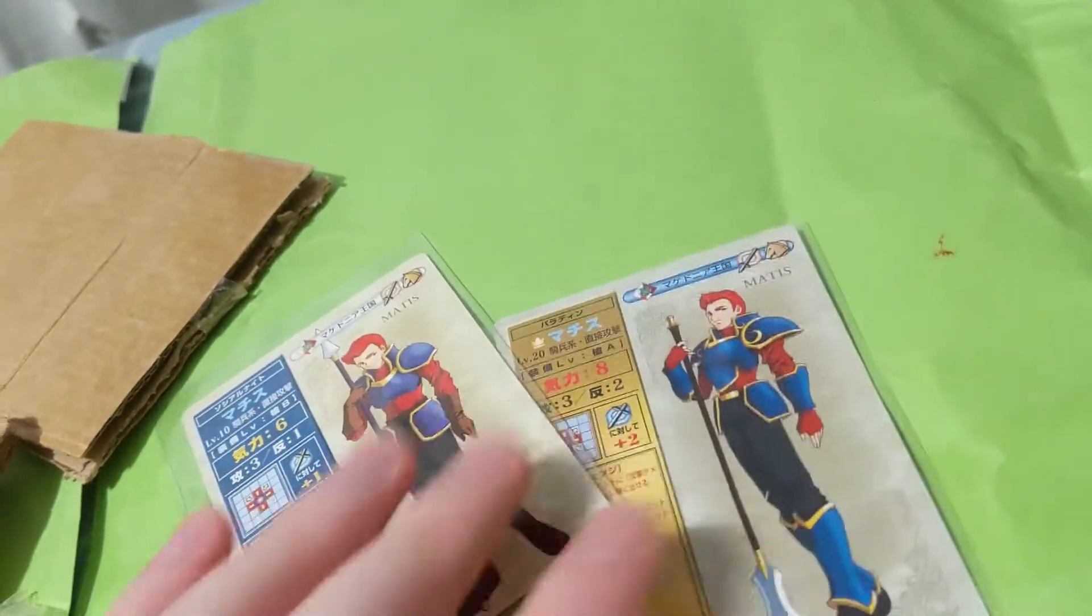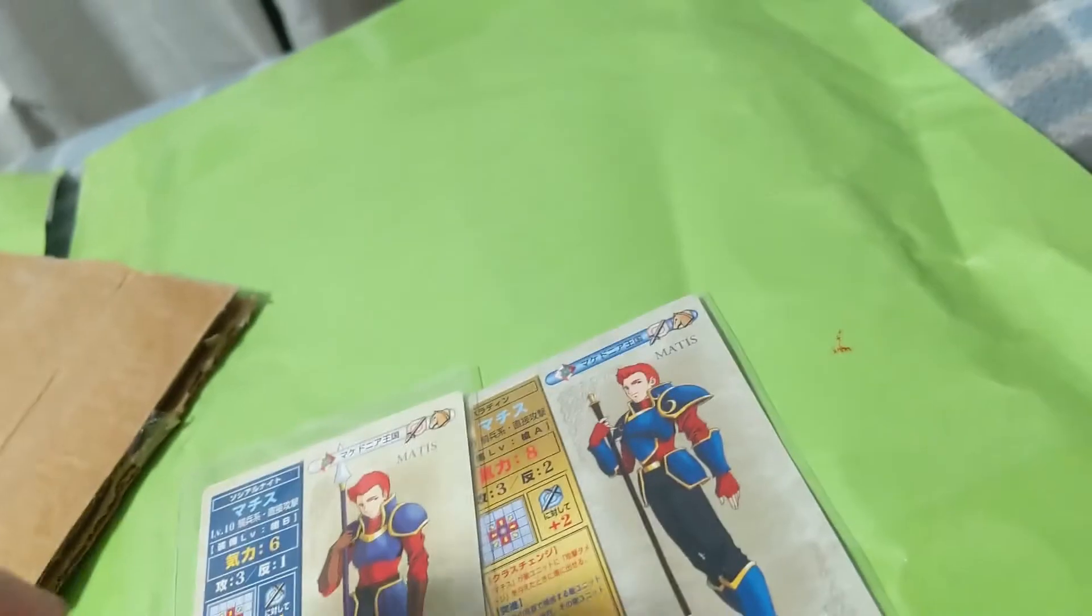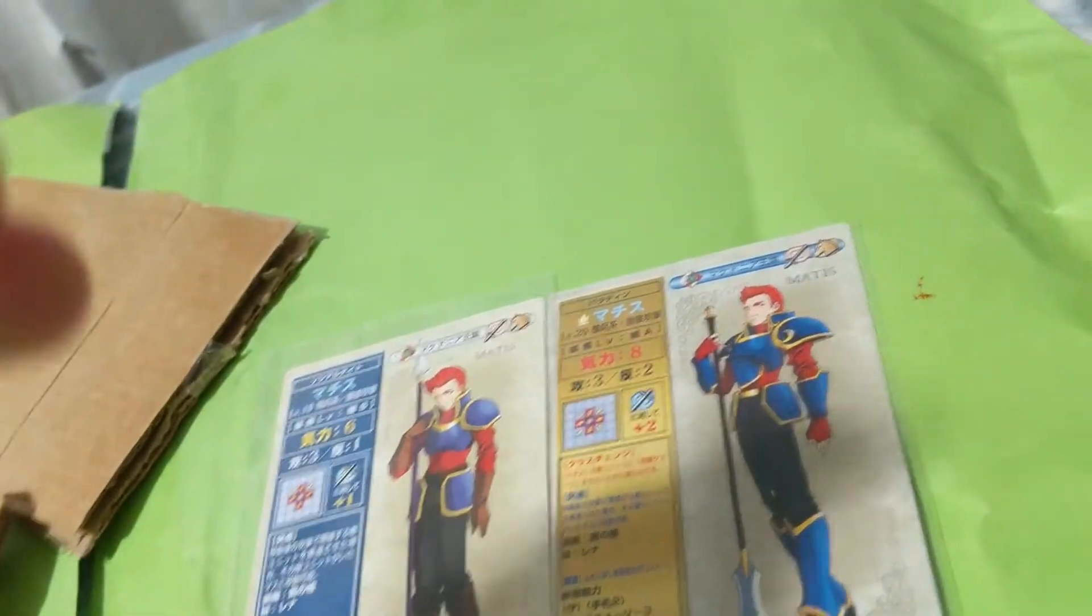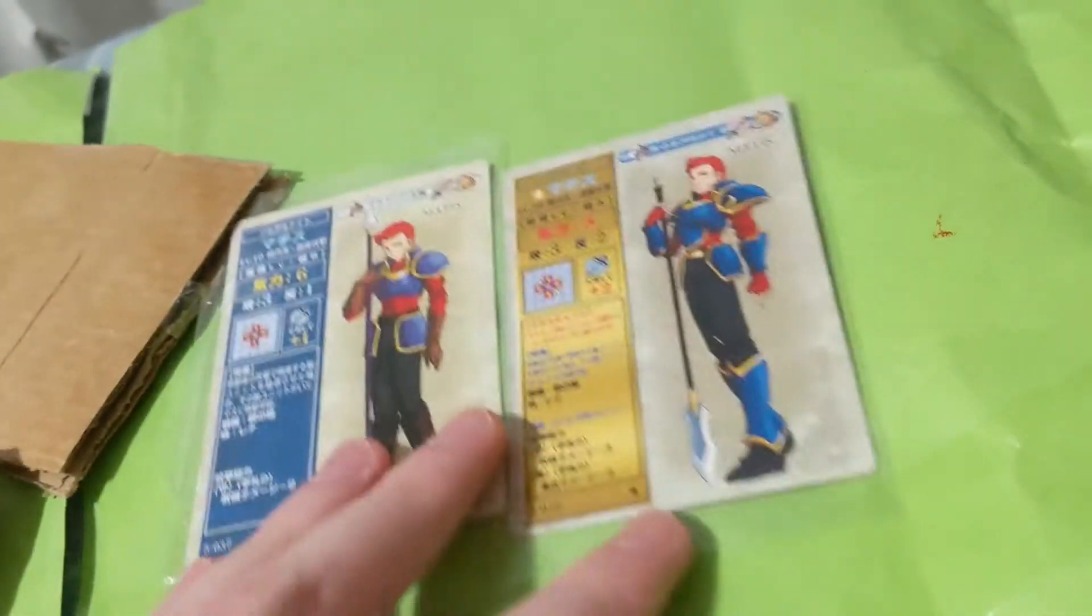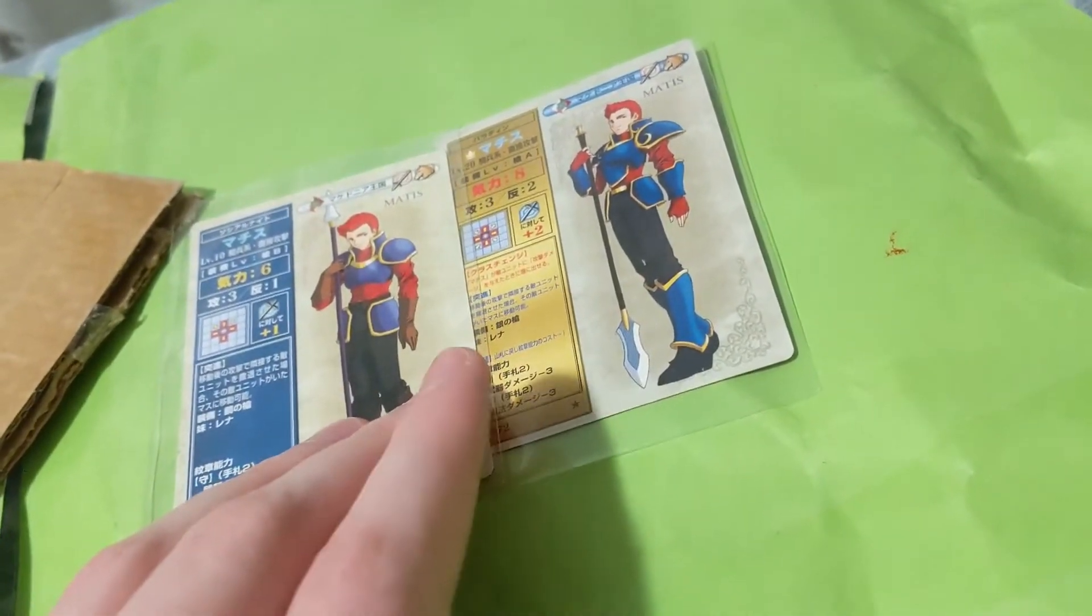Oh jeez, you wouldn't believe the amount of Google Translating I had to do just to even find an auction where these two were available. I had to look at Japanese wikis, and I even found out why Violent was a meme in Japan. And with that, I now own every piece of Mathis merch in existence, including a cipher card.